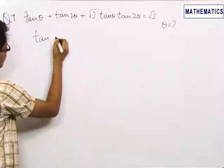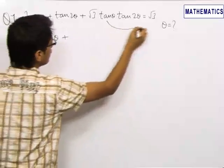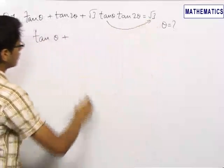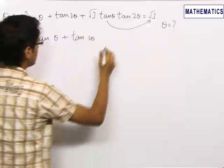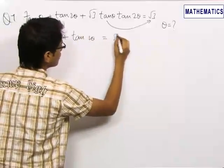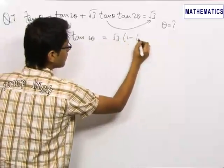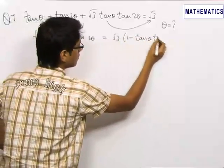So, the first step which we do is we take √3 tan 2θ tan θ to the right hand side. This becomes tan θ + tan 2θ equals √3 times 1 minus tan θ tan 2θ.